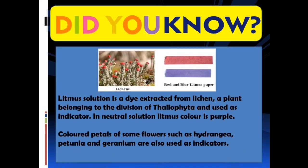Did you know? Litmus solution is a dye extracted from lichen, a plant belonging to the division Thallophyta, and is used as an indicator. In a neutral solution, litmus color is purple. Colored petals of some flowers, such as hydrangea, petunia, and geranium, are also used as indicators.